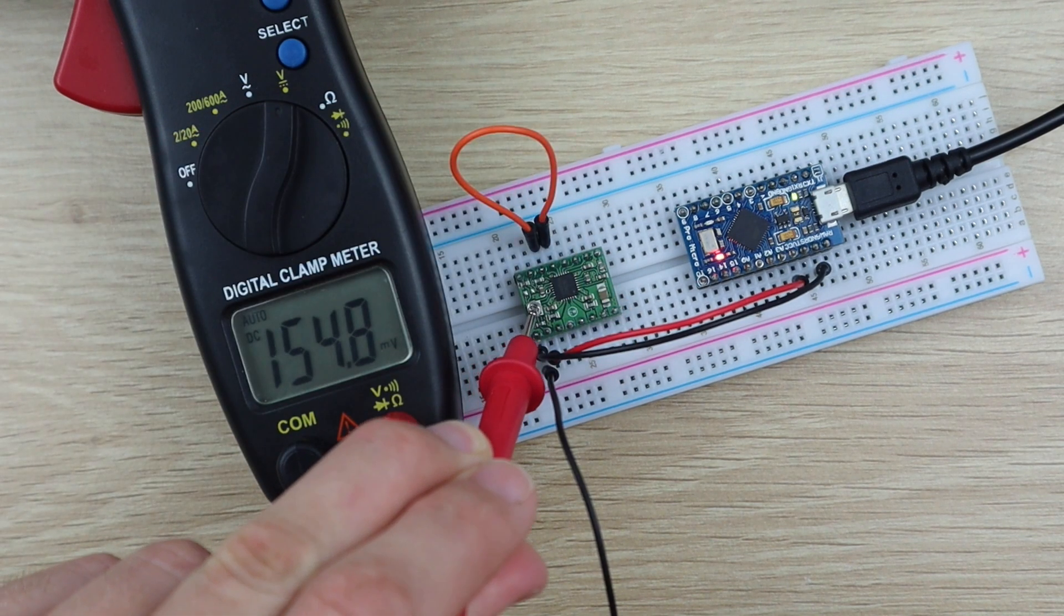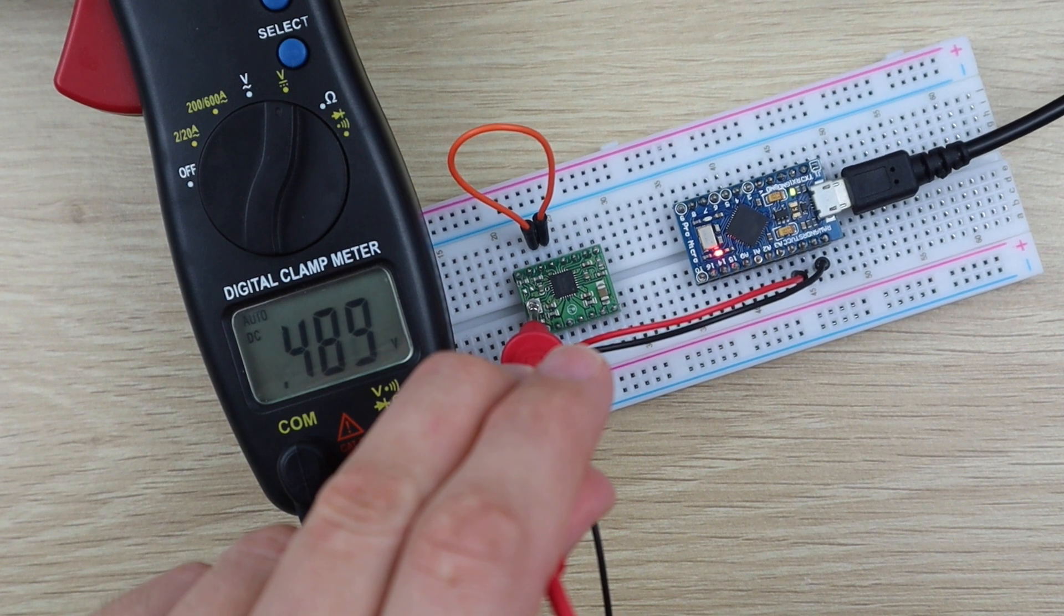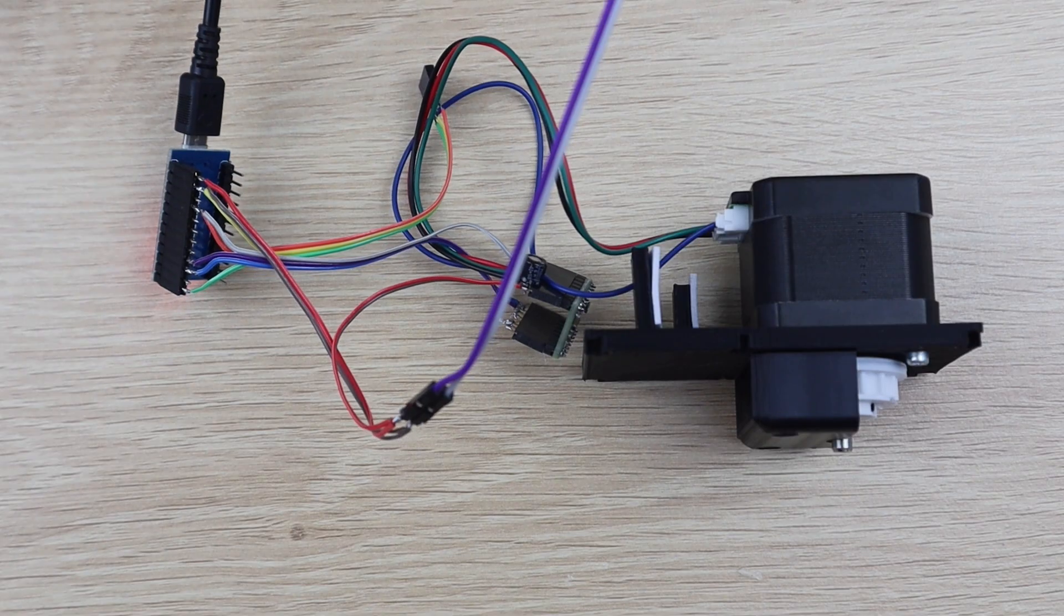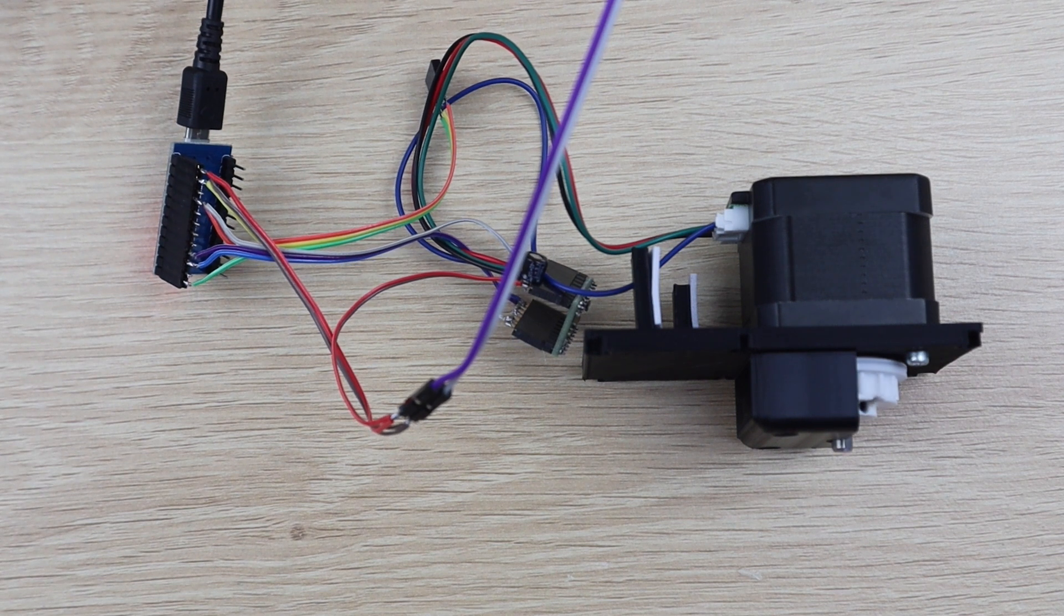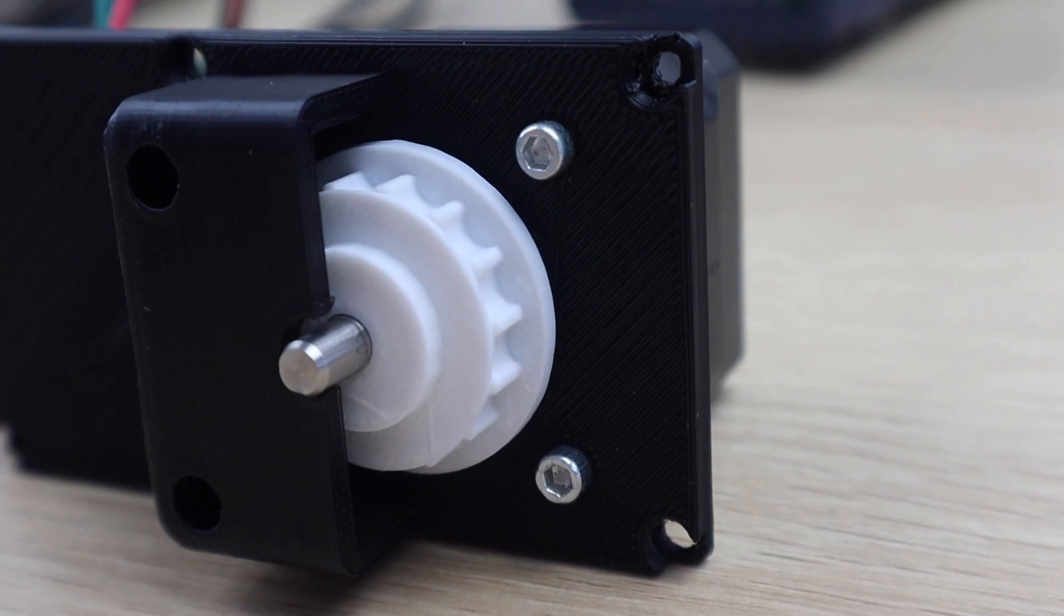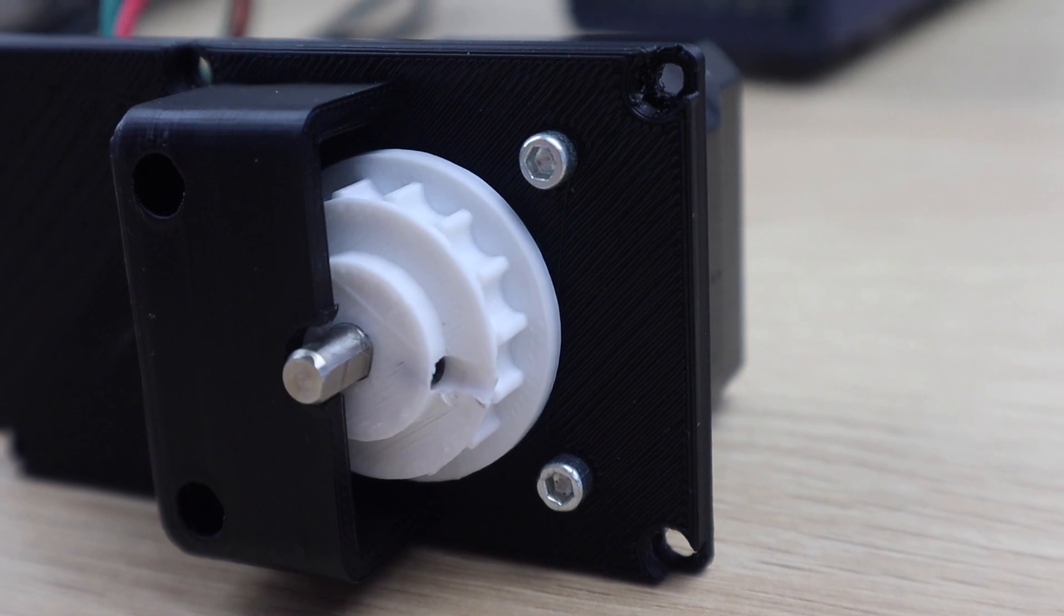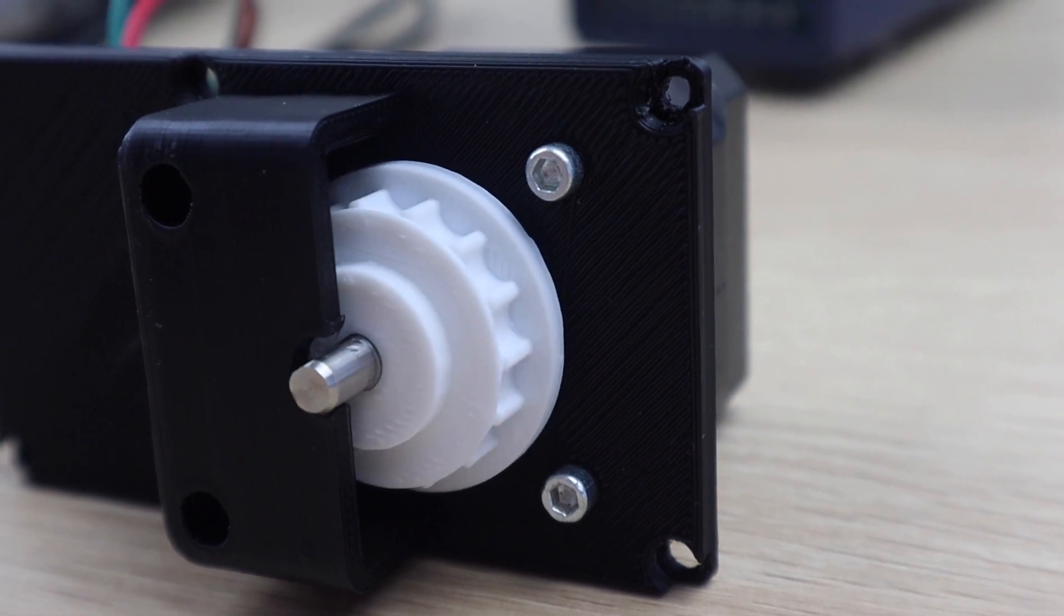Once your current limit is set, then you're ready to power up your Arduino and upload the code. I started out by getting the motor working and stepping for 2 seconds in each direction. This was to test the motor connections and check the motor direction. I then uploaded the actual code.